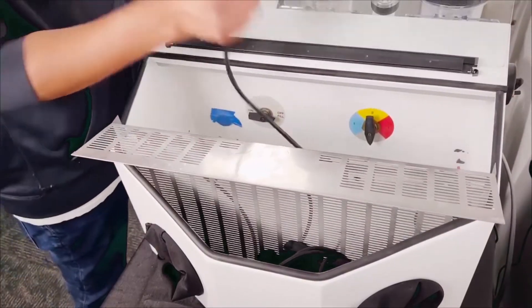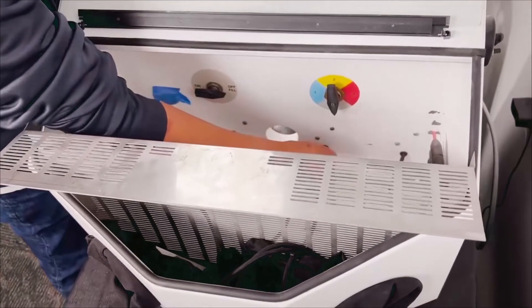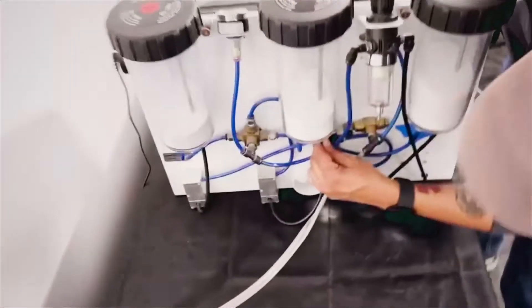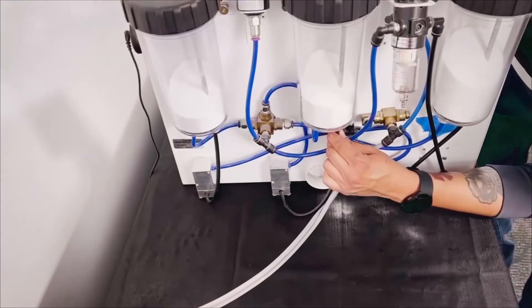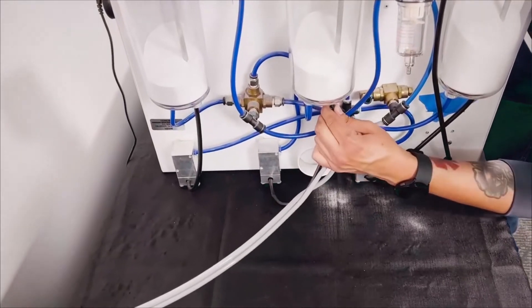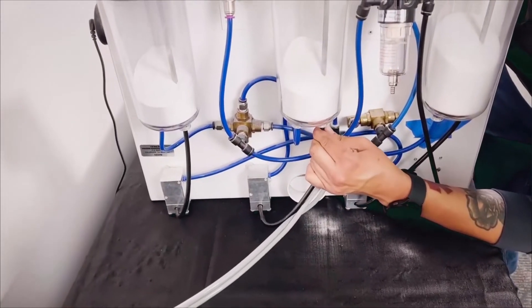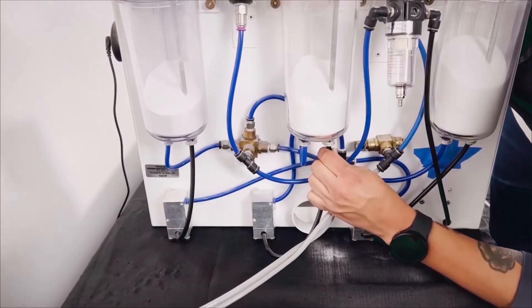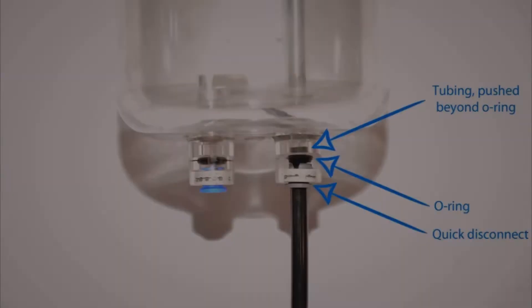Step 5. Return the tube through the pinch valve casing and reconnect the tube to the tank. Remember to push the tube past the o-ring.